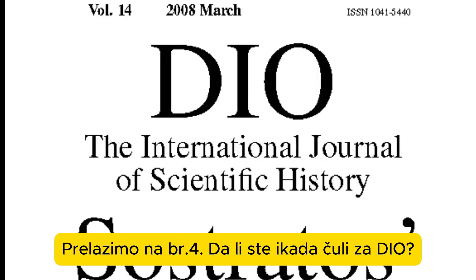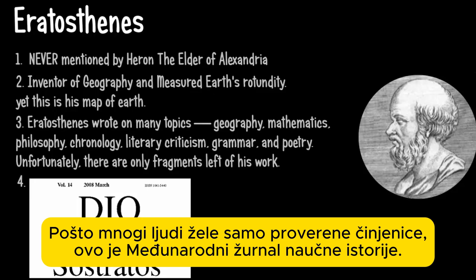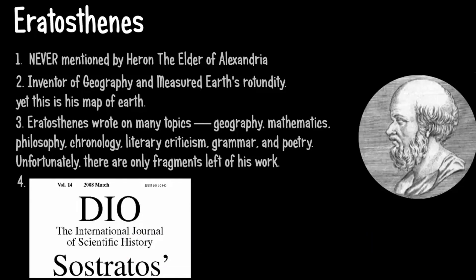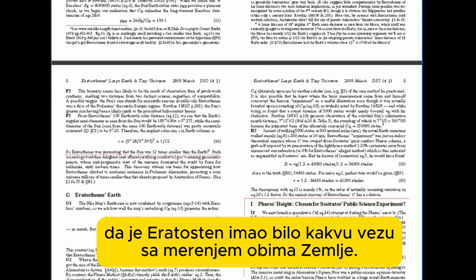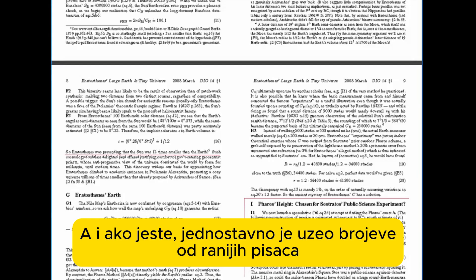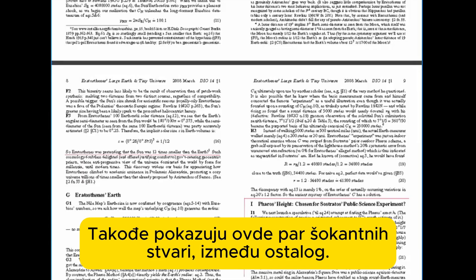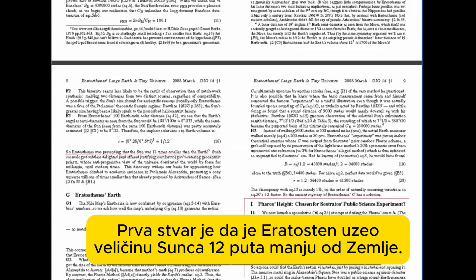We're on to number four. Have you ever heard of DIO? Many people only want to see peer-reviewed papers, so here you go — this is the International Journal of Scientific History. What I'm about to tell you will shatter your worship of Eratosthenes that every heliocentric fan seems to have. The journal sets out to show that there's no possible way Eratosthenes had anything to do with measuring the circumference of the Earth, and if he did, he simply took numbers from earlier writers. Knowing the actual radius of the Earth, it was very easy to come up with a circumference with no test needed. The first shocker is that Eratosthenes had the sun 12 times smaller than the Earth.